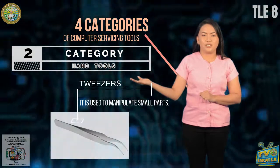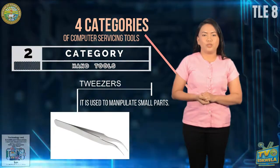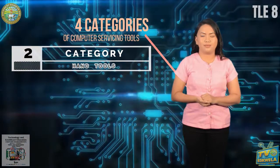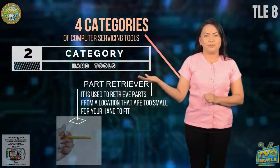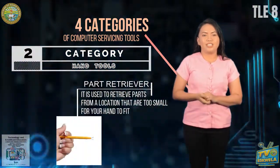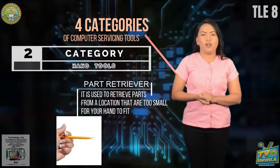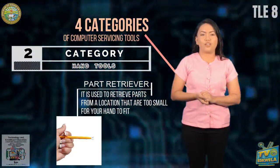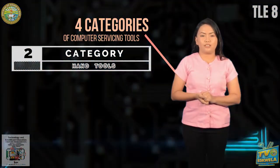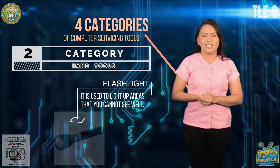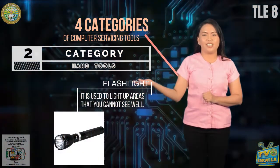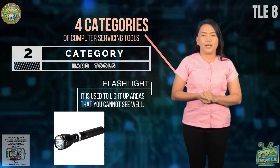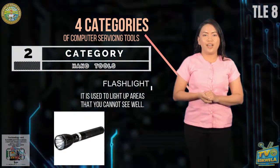Tweezers — used to manipulate small parts. Part retriever — used to retrieve parts from a location that is too small for your hand to fit. And lastly, the flashlight — used to light up areas that you cannot see well.